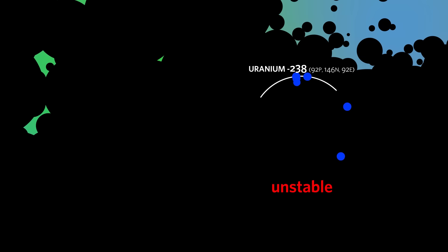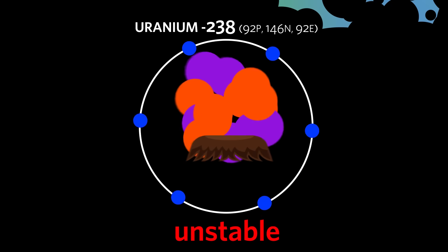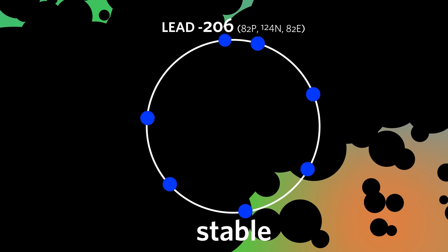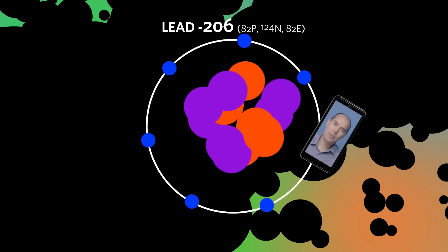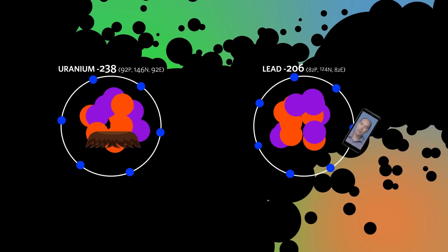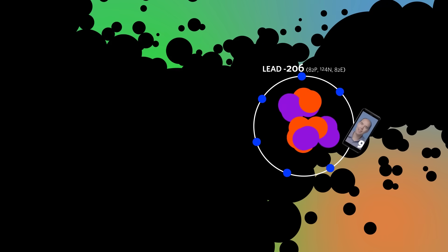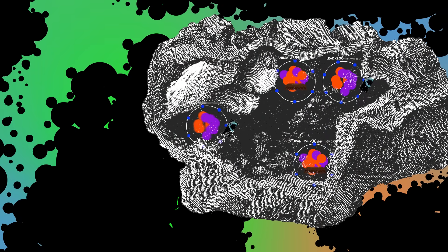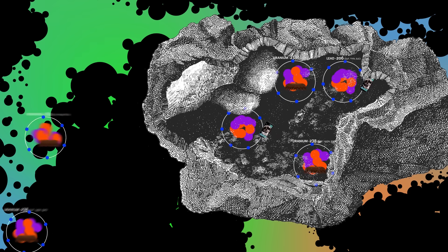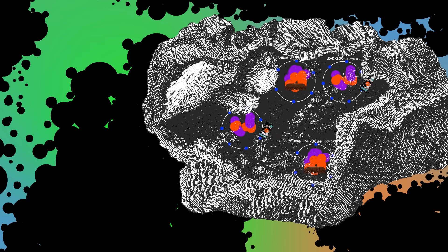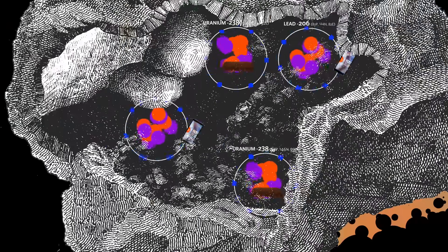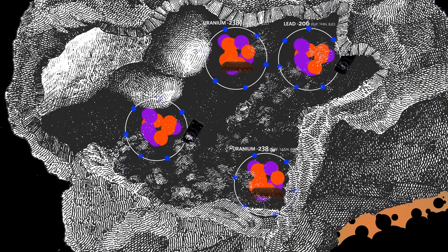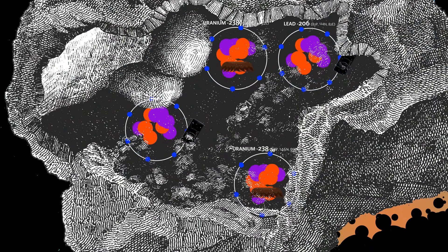The unstable radioactive element you use is called the parent, and the stable isotope you end up with is called the daughter. Dating only works if the only source of the daughter isotope is the decay of the parent. You also need a rock that behaves like a sealed time capsule, preventing daughter isotopes from leaving and keeping new parent isotopes from wandering in. That way, if you end up with half-daughter and half-parent isotopes, you know that one half-life has gone by.